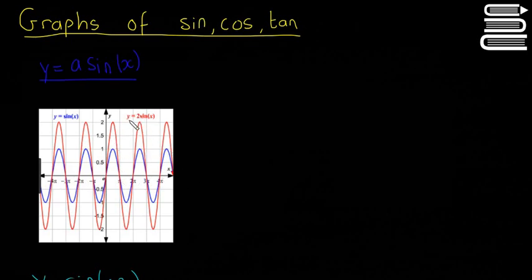So the red one here is y is equal to 2 sine x. So there's a number before sine x, so like the a here, in this case a is equal to 2. And we see that it goes up higher and down lower. So it still repeats itself at the same point and it still hits the origin. Other than that it's the same as the blue one, it just goes up higher and down lower.